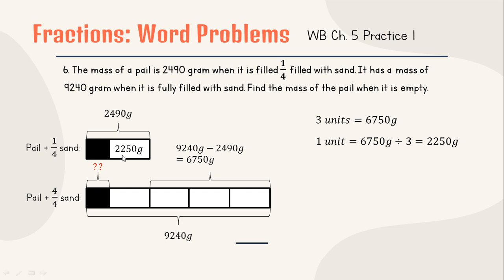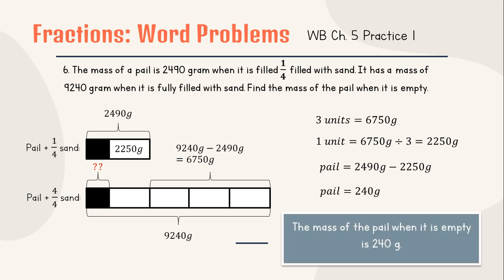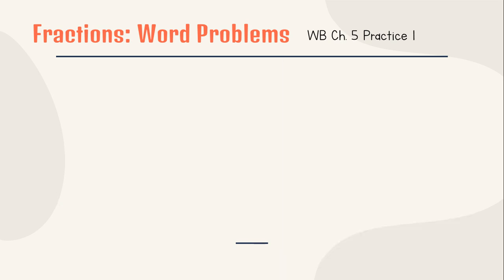Can we find now the mass of the pail? Yes. By subtracting: 2,490 minus 2,250 equals 240 grams. So the mass of the pail when it is empty is 240 grams. Sounds complicated? I'll give you 10 seconds to look at it, or you can pause this video to study over.